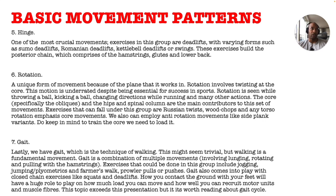Number five: Hinge — one of the most crucial movement groups. Key exercises include deadlifts with variant forms such as sumo deadlifts, conventional deadlifts, Romanian deadlifts, and kettlebell deadlifts or swings. These exercises build the posterior chain, which comprises the hamstrings, glutes, and lower back. You can also perform hinging movements like back extensions — as long as you're hinging, you're covering that movement pattern.